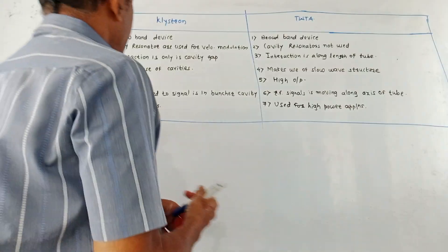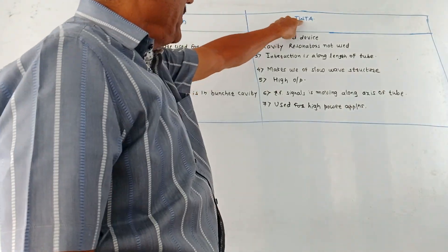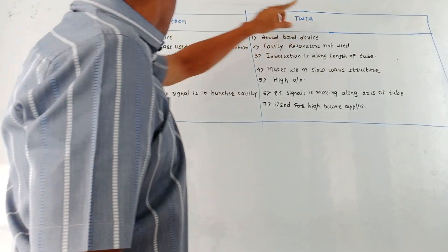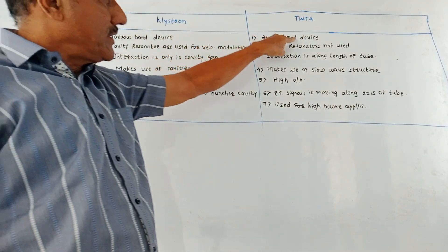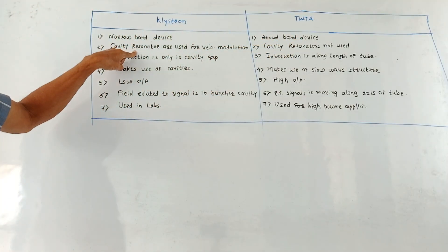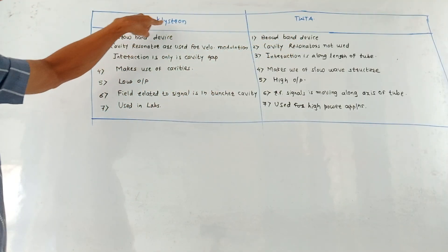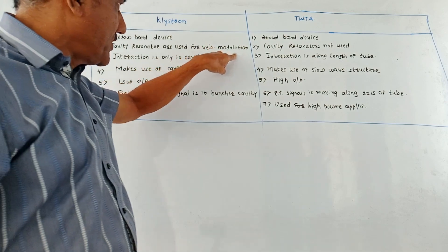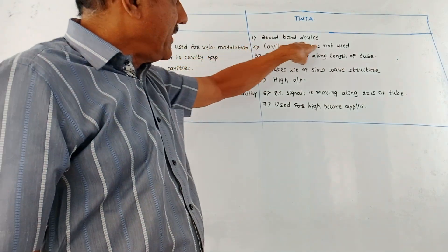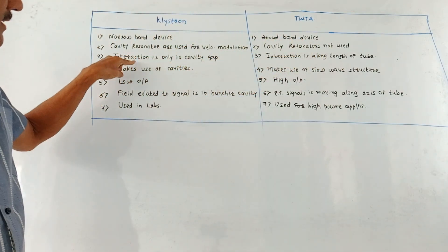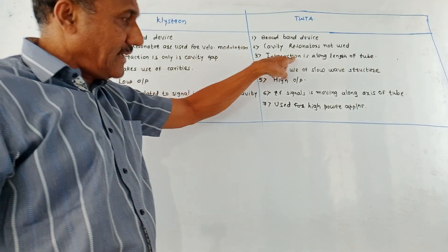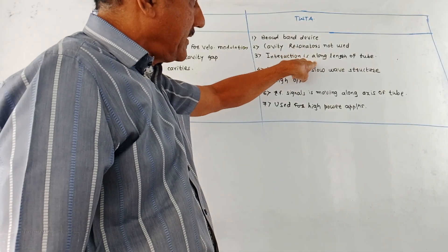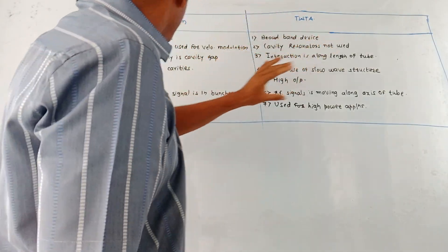Next part is comparison between klystron and a traveling wave tube amplifier TWTA. First is klystron is narrow band device, whereas TWTA is a broadband device. Then cavity resonators are used in klystron for the velocity modulation purpose. Here cavity resonators are not used. In klystron, interaction takes place only in the cavity gap, whereas in TWTA, interaction is taking place along entire length of the tube.